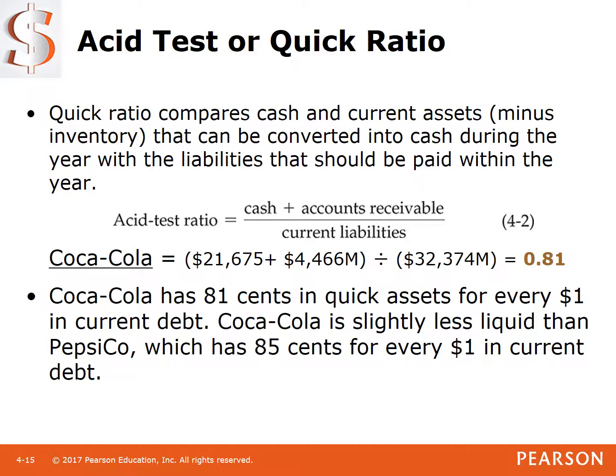This means Coca-Cola has $0.81 in quick assets to pay every $1 of current liabilities. If all current liabilities became due today, they could only pay 81% of them with liquid assets. It might look okay or bad, but without comparison it's hard to know. Comparing to PepsiCo, whose quick ratio is $0.85, they're pretty close — Pepsi is doing slightly better.